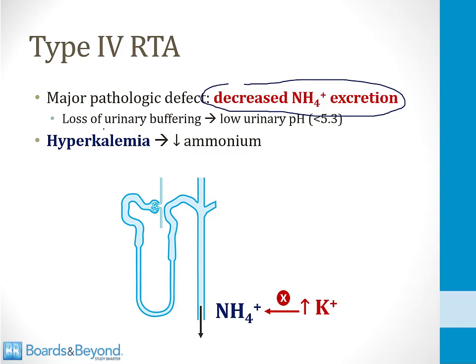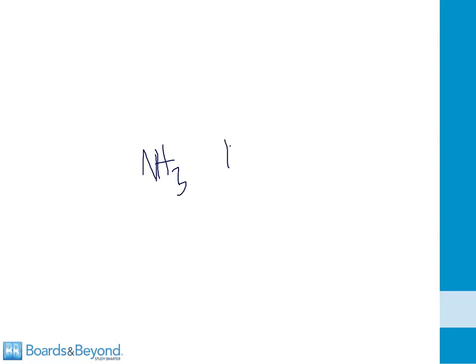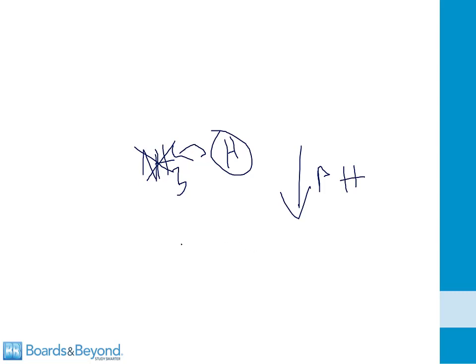Ammonia is a urinary buffer. So when you lose ammonia in the urine, that leads to a low urinary pH — and that's what you see in a type 4 RTA, a low urinary pH less than 5.3. Normally the proximal tubule synthesizes ammonia (NH3), and ammonia can pick up a proton to become NH4. For this reason, ammonia is a buffer — it can pull protons out of solution and prevent the pH from dropping. So when ammonia production decreases in a type 4 RTA, this causes loss of urinary buffering, and as a result there are lots of protons in solution and a decrease in the urinary pH, one of the hallmark features of a type 4 RTA.